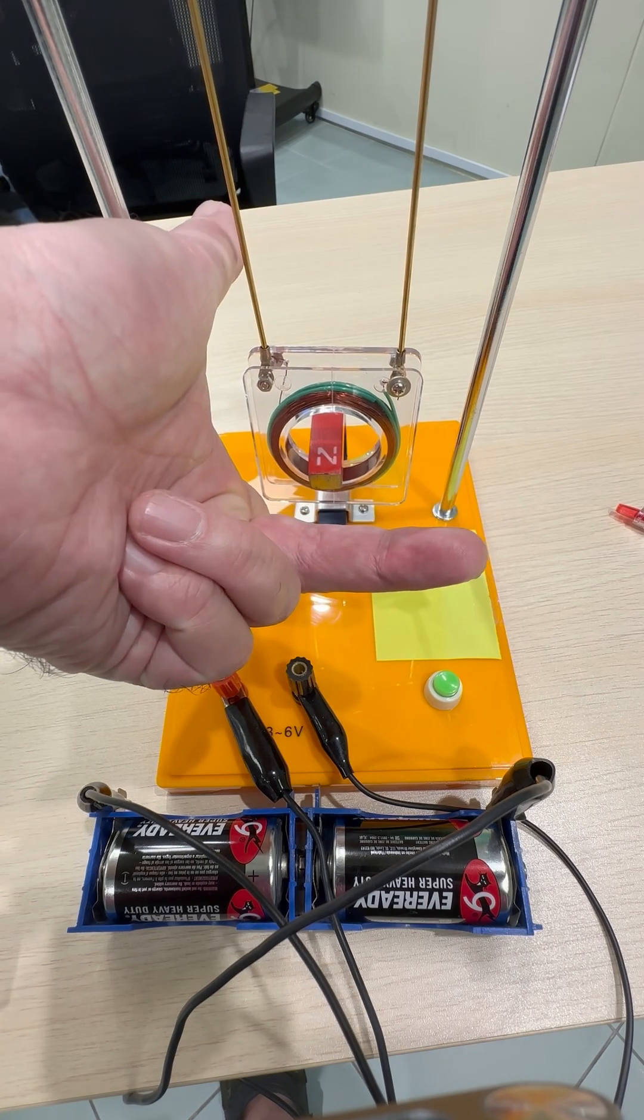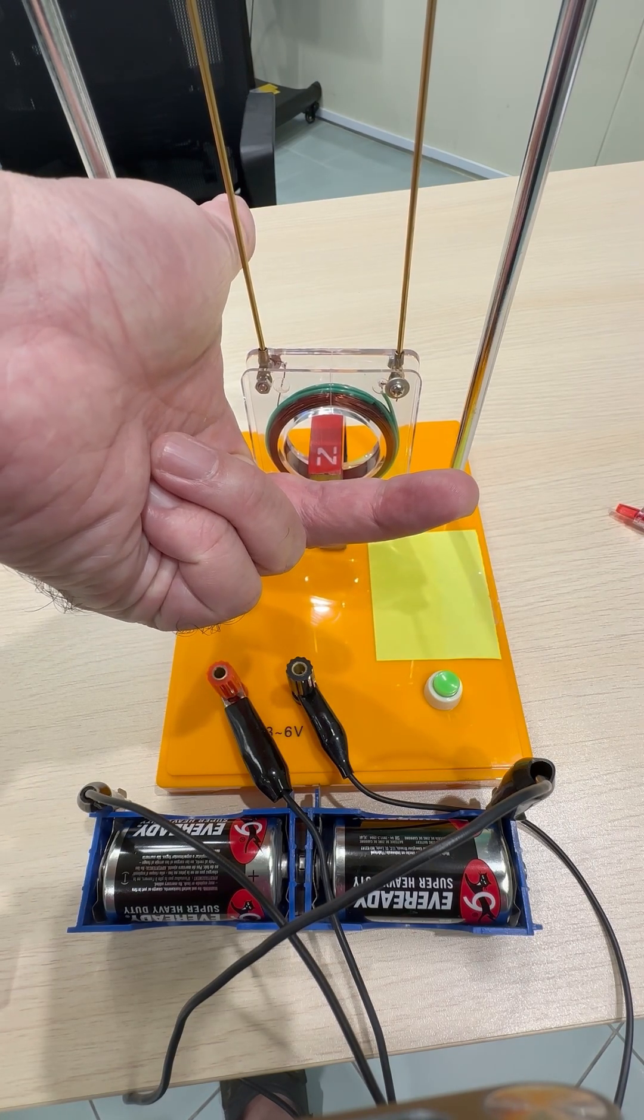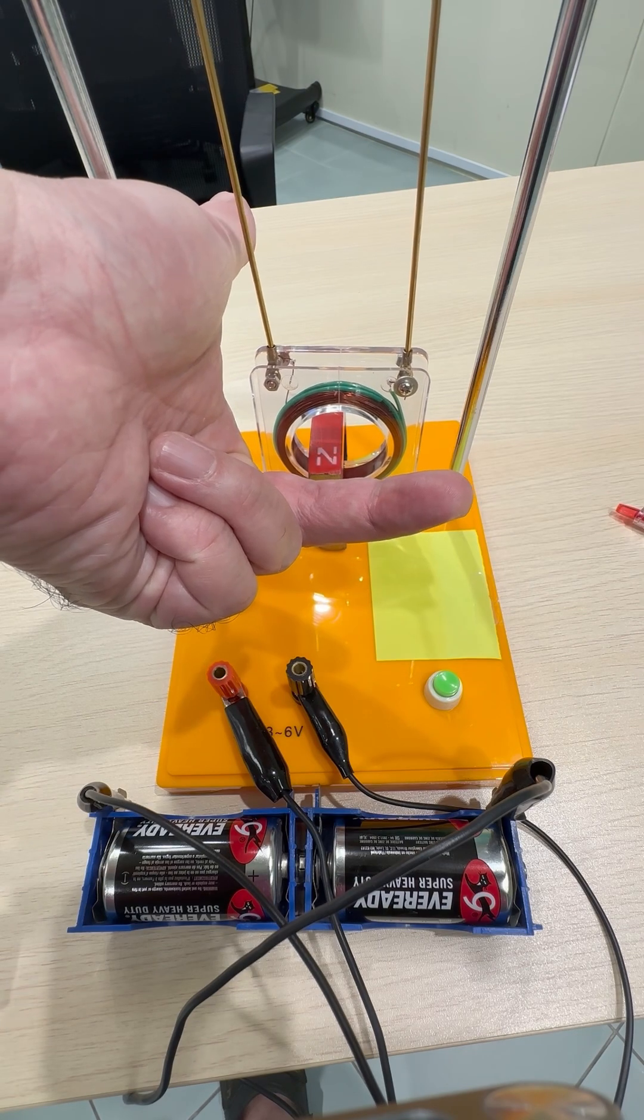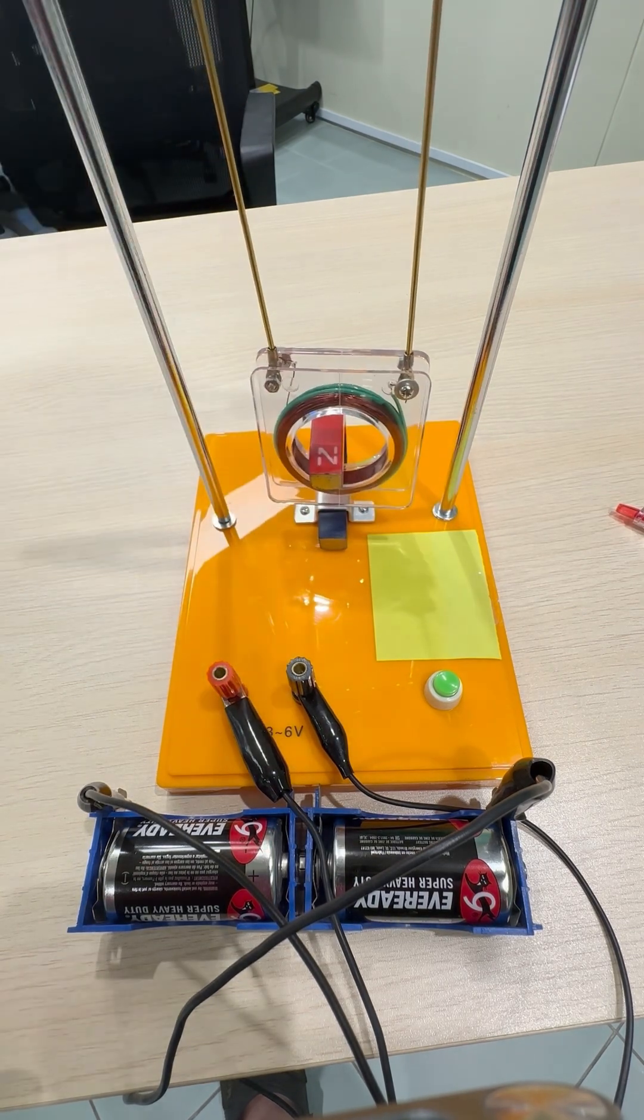The thumb, which is the force, will be pointing away from us, and therefore the coil will move away from us. So now here we repeat the loop I'm going to show now.